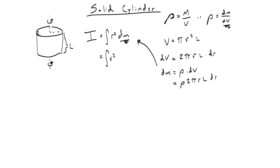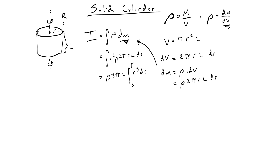We pull out anything that's constant — rho, 2 pi, and l — since it's a uniform cylinder, and combine the r terms inside the integral to get the integral of r cubed dr. We integrate from the smallest radius, which is 0 at the center, all the way out to the outer edge, which we call capital R for the total outermost radius. So we integrate from 0 to capital R.